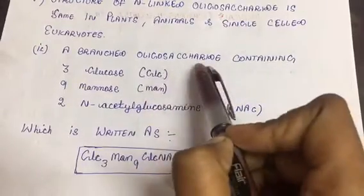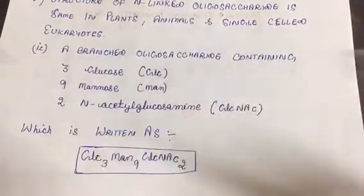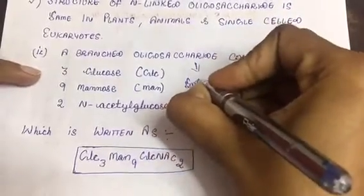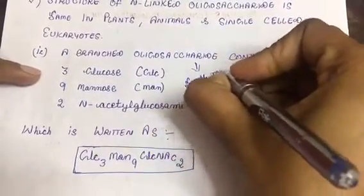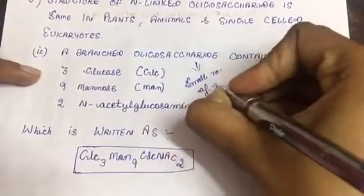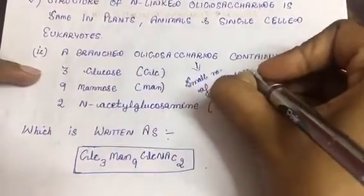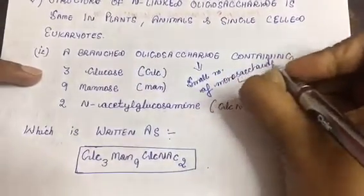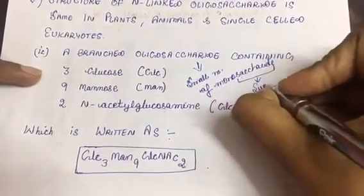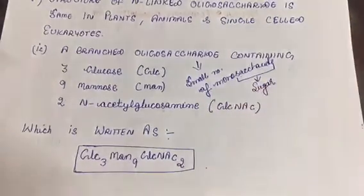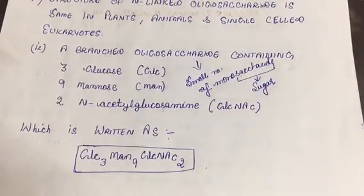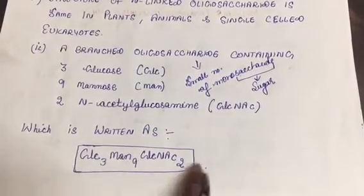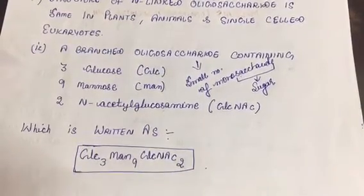Oligosaccharide has a small number of monosaccharide units. What is saccharide? Simple sugar. So this is the structure of this N-linked glycosylation, the oligosaccharide which is going to be attached onto the protein is glucose 3, mannose 9, and N-acetylglucosamine 2.